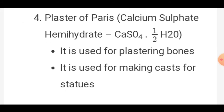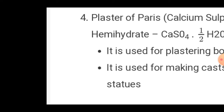Plaster of Paris is calcium sulphate hemihydrate (CaSO4·½H2O). 'Hemi' means half. It is used for plastering broken bones and for making casts of statues.